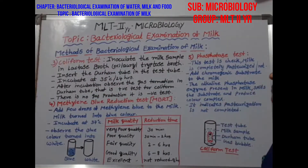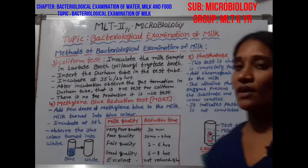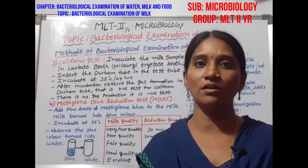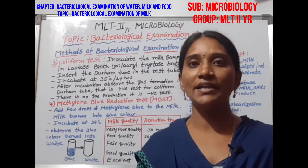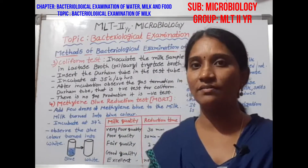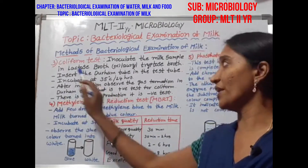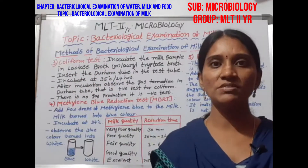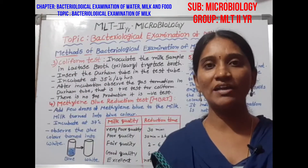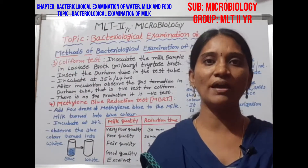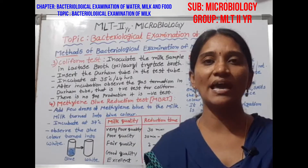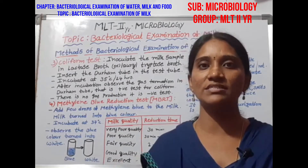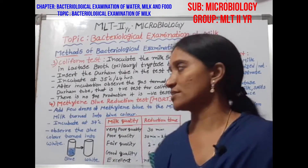The third method is the coliform test. Coliform bacteria present in milk can be identified by this method. The microorganisms enter milk by many ways, like handling, collecting vessels, and storage vessels.